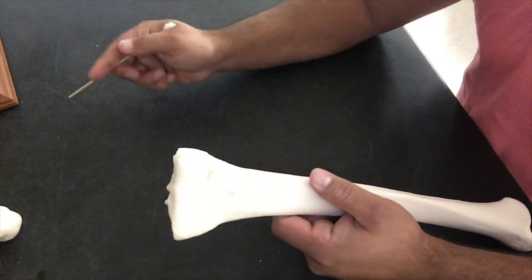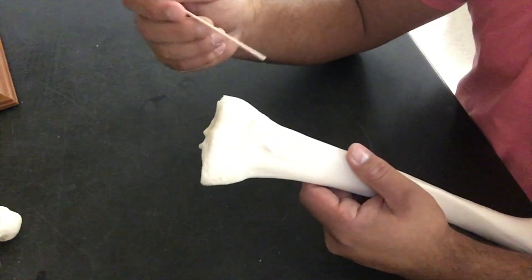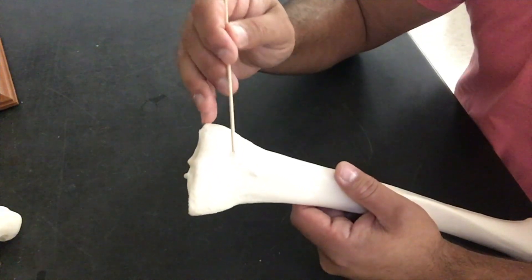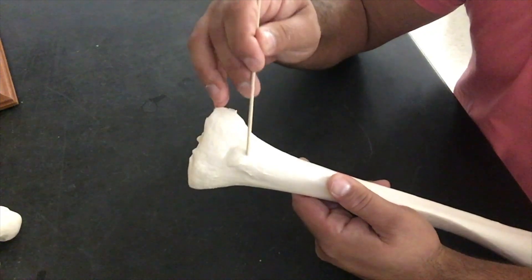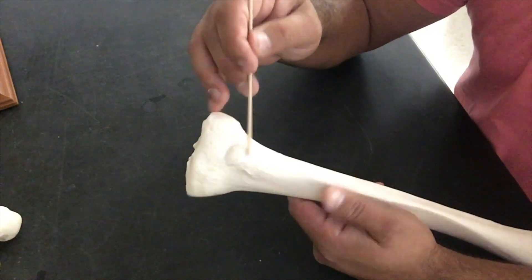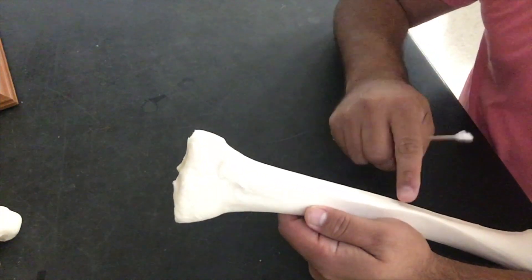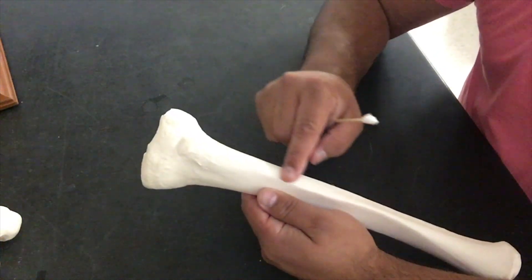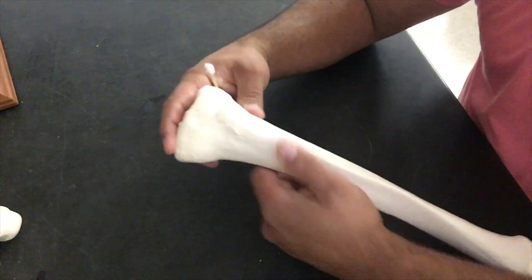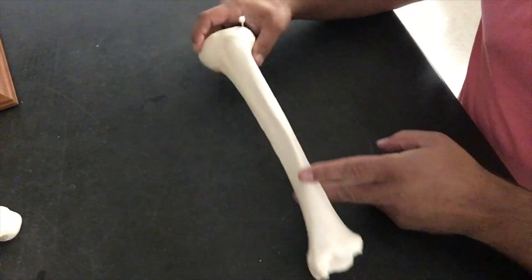Now let's go back to the proximal end. We have this big bump right here, this is a tibial tuberosity. See that big bump, tibial tuberosity. This crest, and again, you could pinch that big crest, is your anterior tibial crest. This is the body or shaft of the tibia.